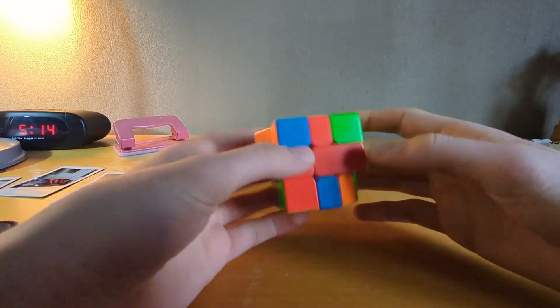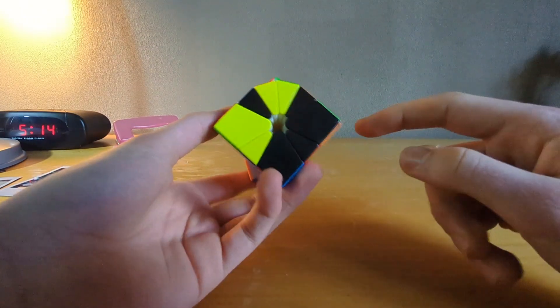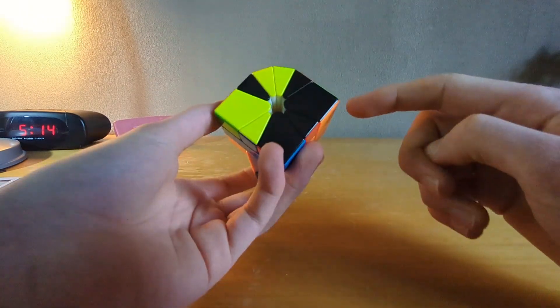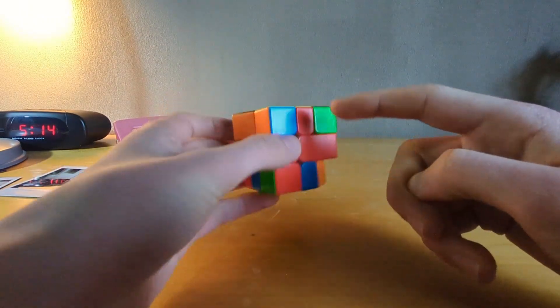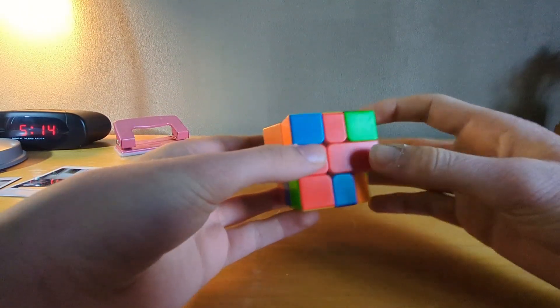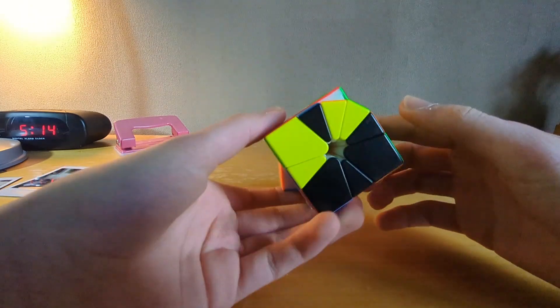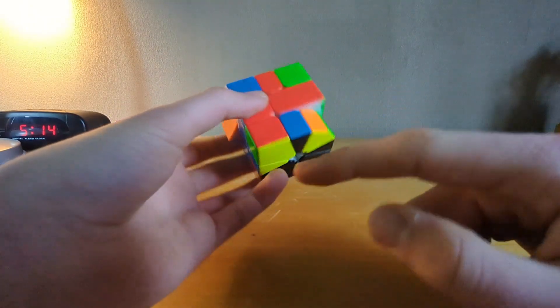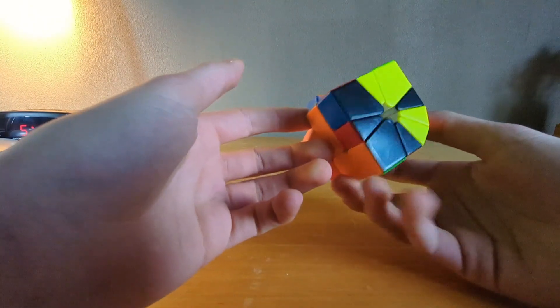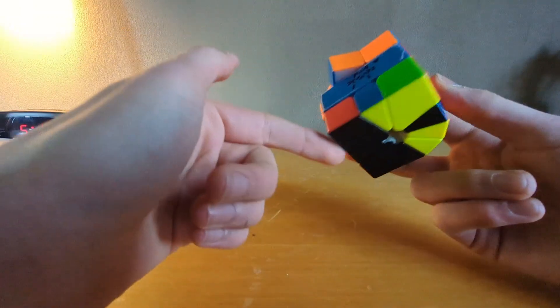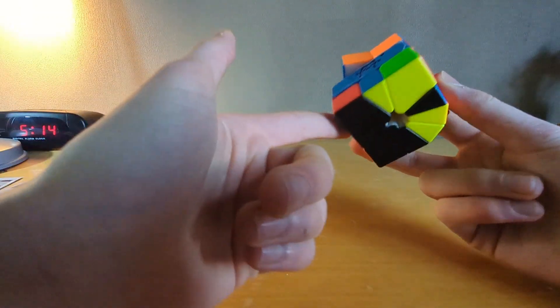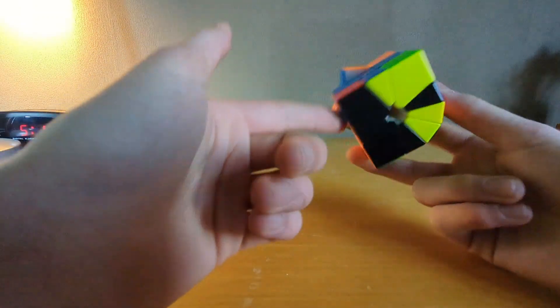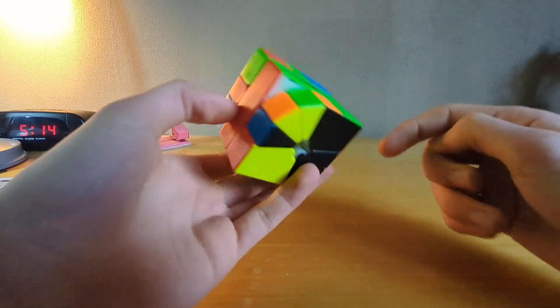And then I thought it couldn't get any better, but then I get this scramble which I actually just straight up two-looked, because it's one slice to scallop kite. And if you know how to track pieces, then the orange block just gets solved after cube shape on the right, so I just have to do a D2 and to solve the first block.